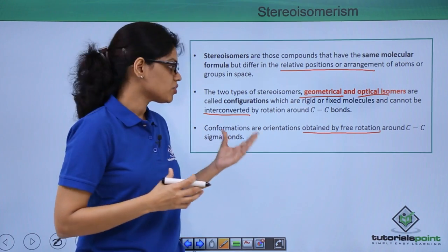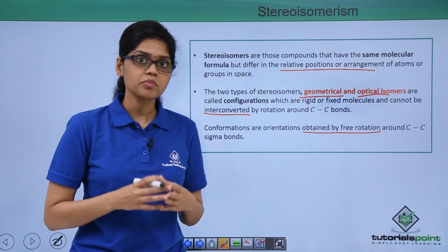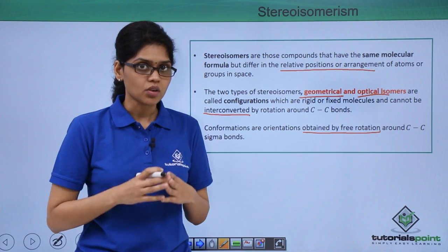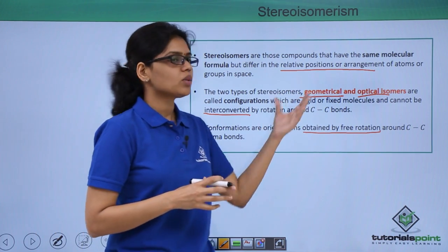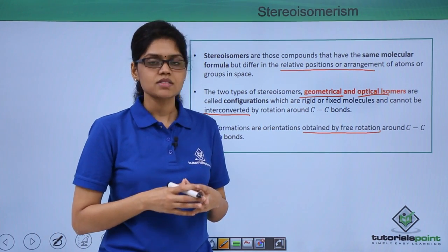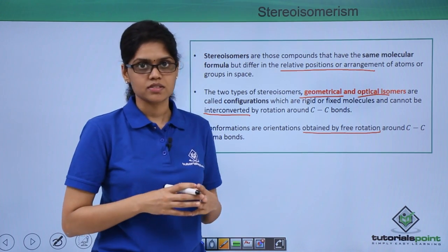More about conformations will be dealt in your chapter hydrocarbons and for now let's try to understand a bit more about geometrical isomers, the first type of stereoisomers.